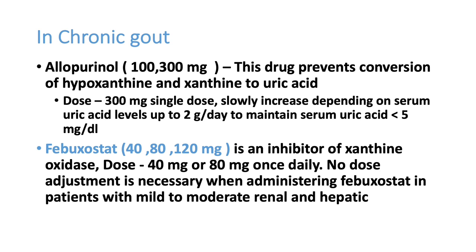For chronic gout, acute attacks are managed with NSAIDs, paracetamol, steroids, or colchicine — with colchicine as the first-line drug. To prevent chronic attacks, either allopurinol or febuxostat can be started. Gout is a chronic disorder, and once preventive tablets are stopped, patients can develop sudden acute attacks.